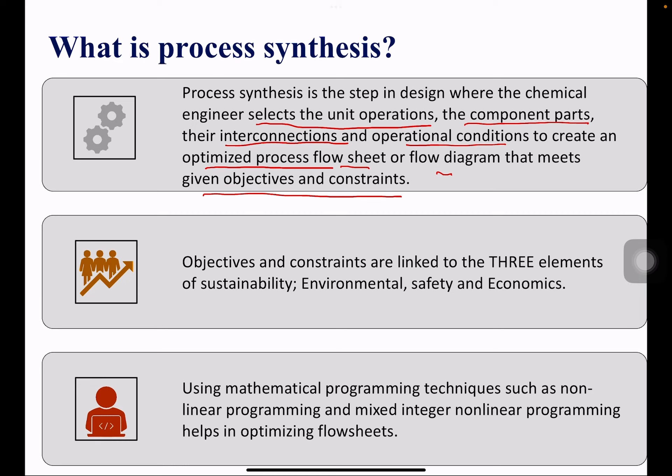The objectives and constraints here are linked to the three elements of sustainability: environmental, safety, and economics. Mathematical programming techniques such as non-linear programming or mixed integer non-linear programming are generally used to optimize the flow sheet. When you perform system optimization, it gives you a more sustainable process.